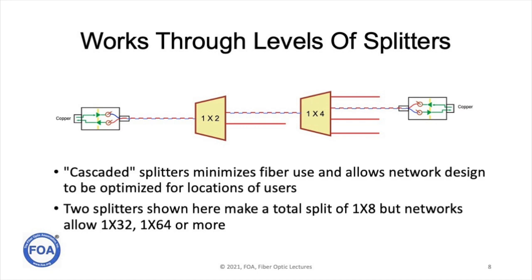The most widely used PONs today are GPON, or Gigabit PON. It takes a 2.5 gigabit per second downstream signal and splits it for up to 32 users. Going upstream, it takes a 1.25 gigabit per second signal from each user and combines it in the splitter to go back to the central office. Newer versions use 10 gigabits per second and can split to as many as 512 users.